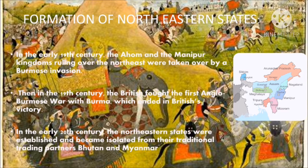Post-Independence, the Northeast region consisted of only Assam and the princely states of Manipur and Tripura. Nagaland, Meghalaya, Arunachal Pradesh and Mizoram were part of the larger territory of Assam. They subsequently got separated and formed their own states. The states of Tripura and Manipur were union territories till 1972, when they attained statehood. Sikkim was not originally part of the Northeast. Now, Karan will continue.